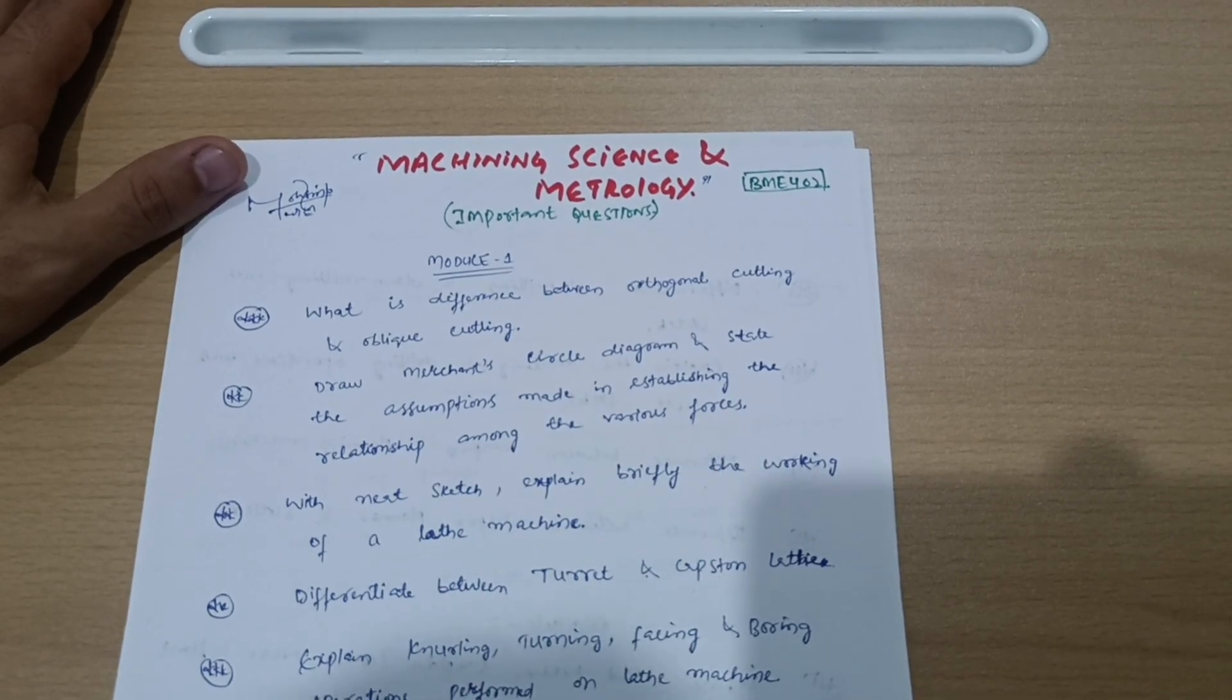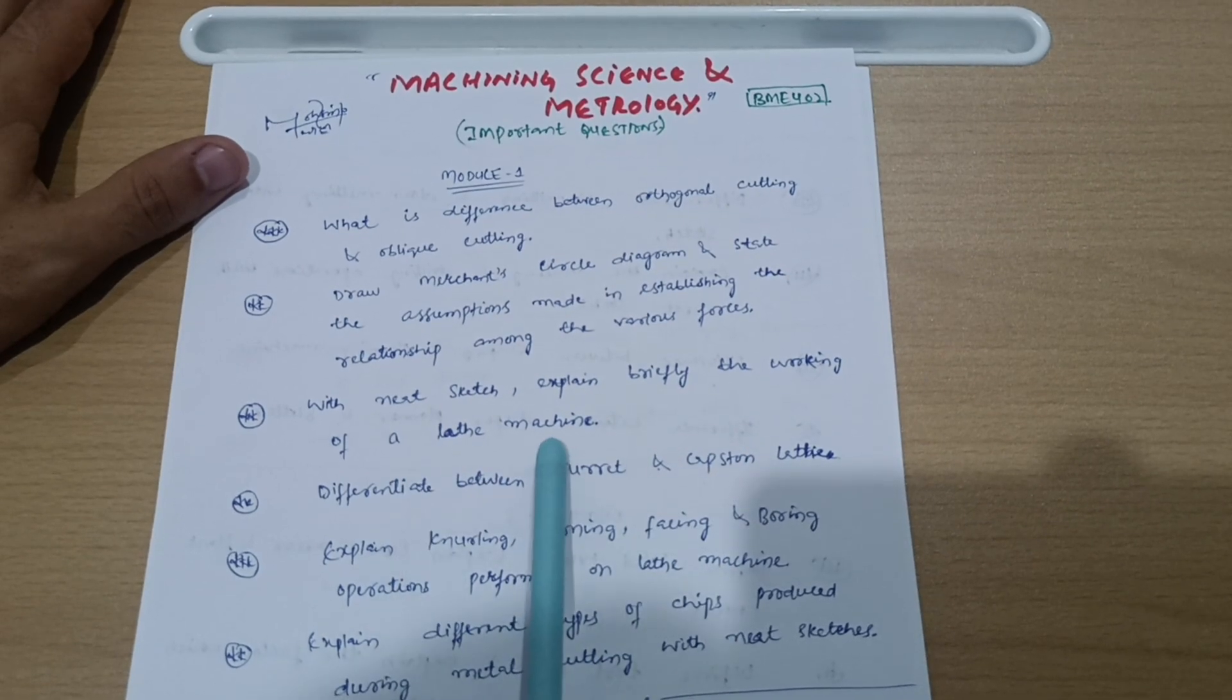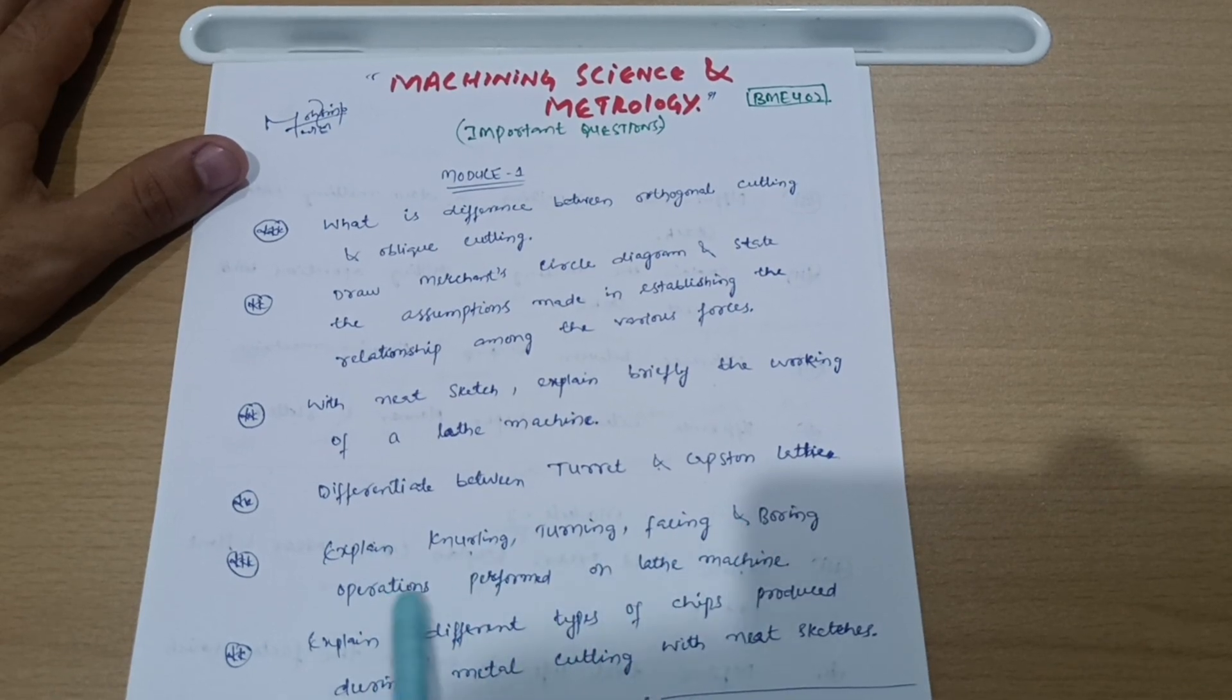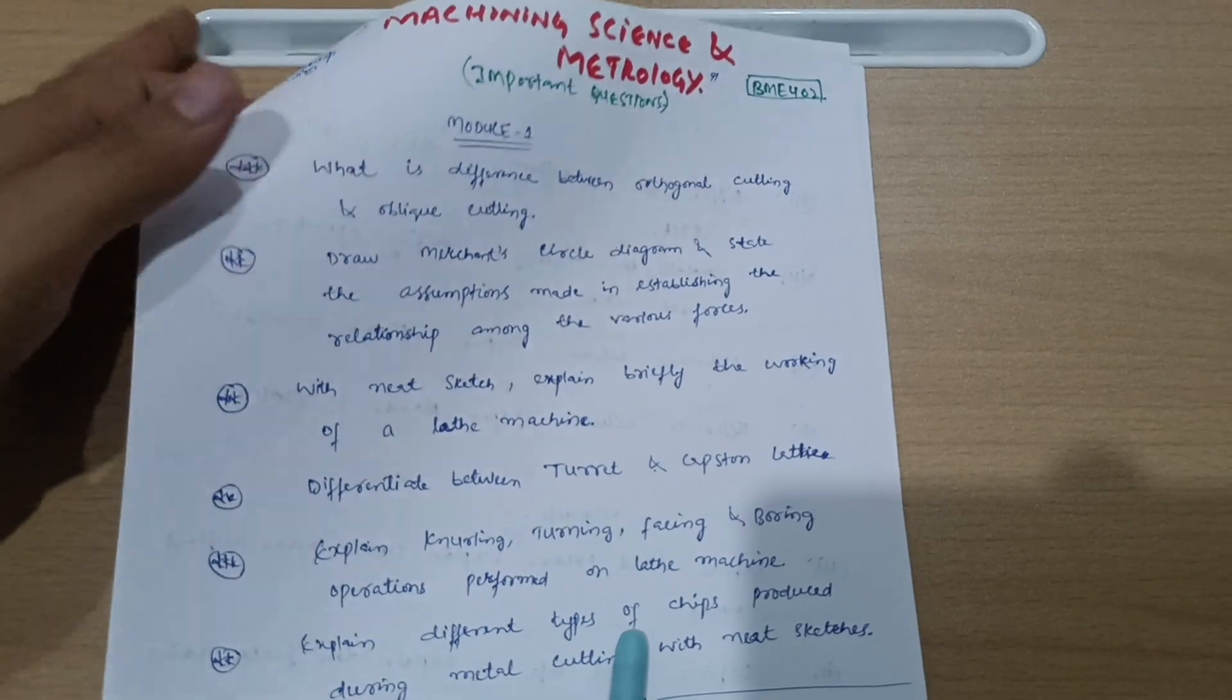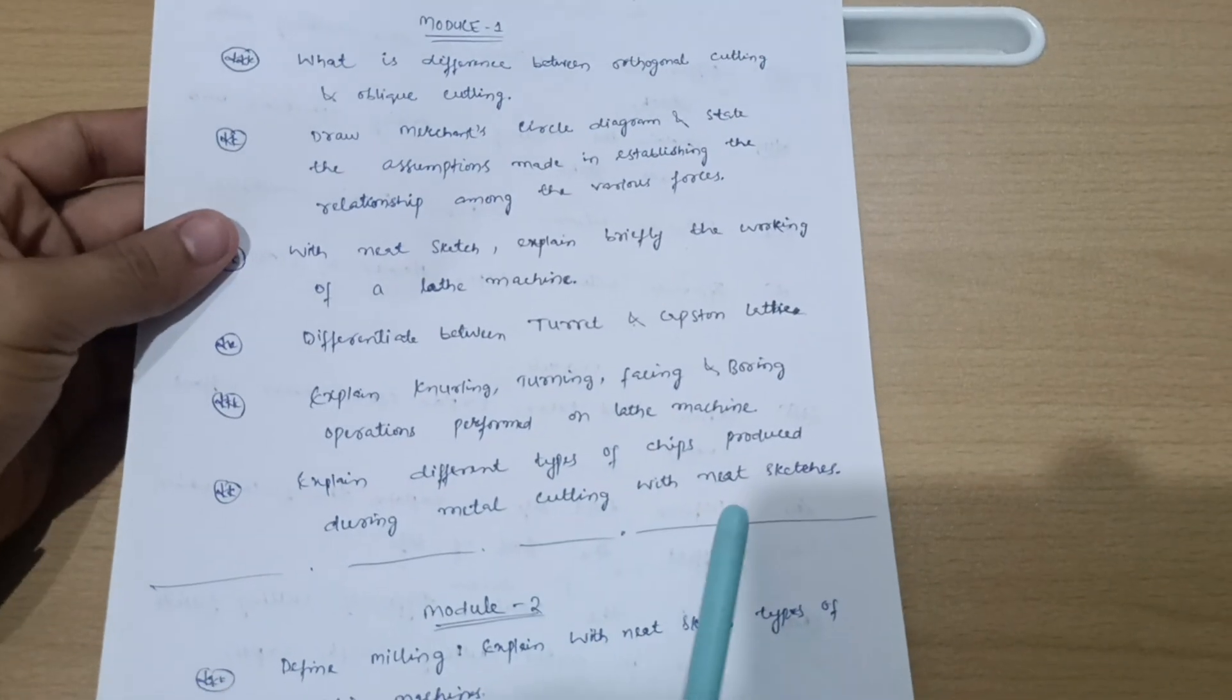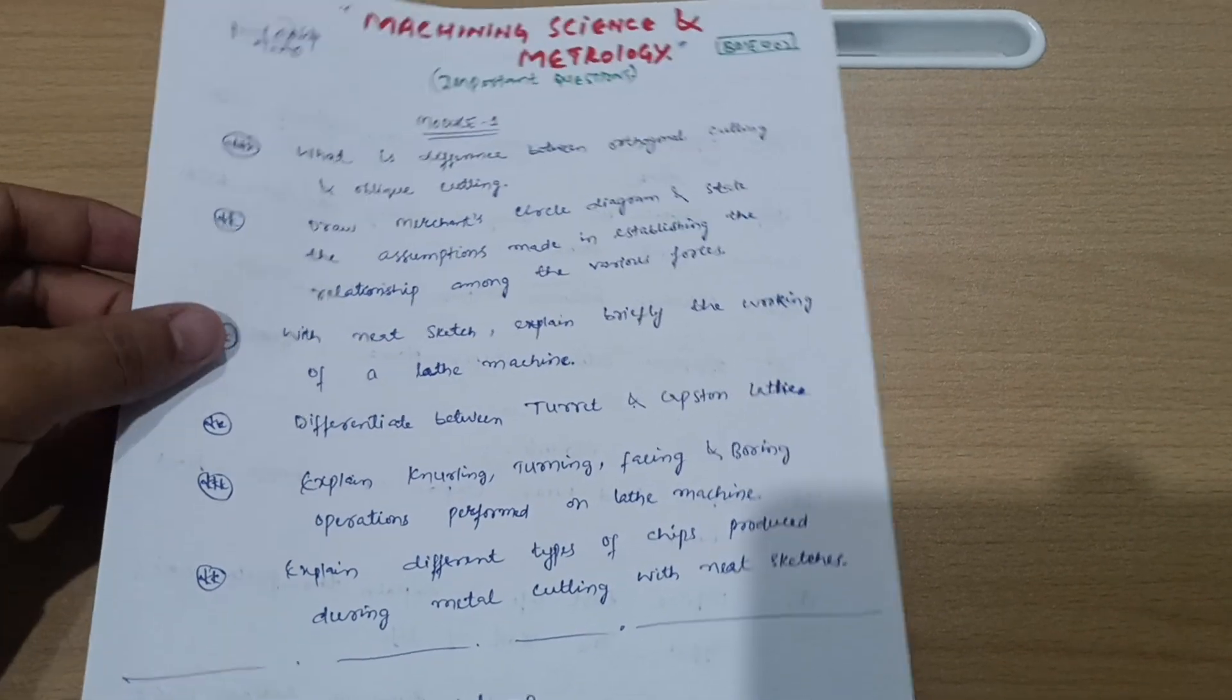Differentiate between turret and capstan lathe. Explain knurling, turning, facing, and boring operations performed on lathe machine. Explain different types of chips produced during metal cutting with neat sketches. This is all about Module 1. Cover these important topics.